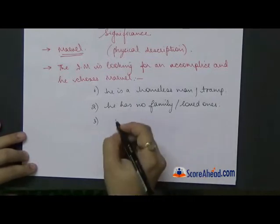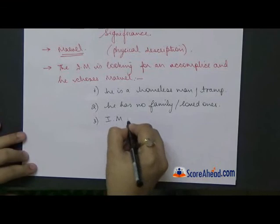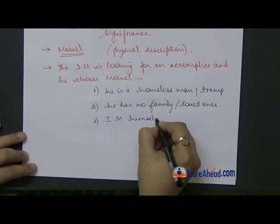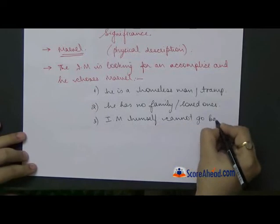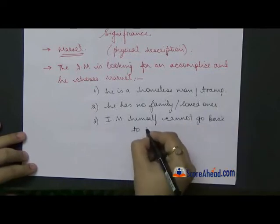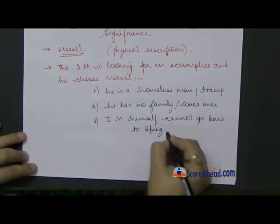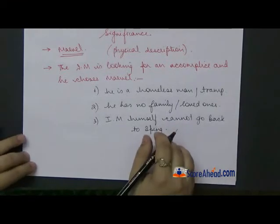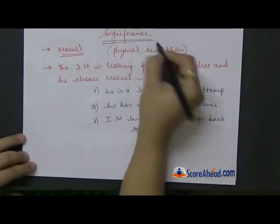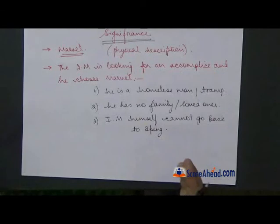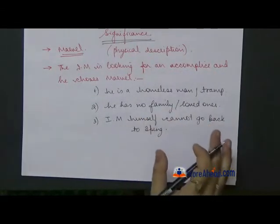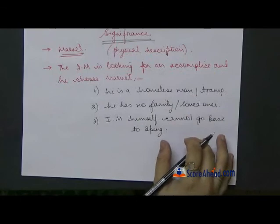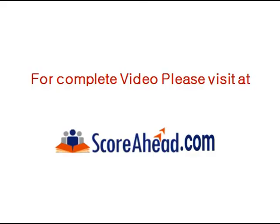The last reason is that the Invisible Man himself cannot go back to Iping, and he really wants his stuff back. Apart from the clothes, his experimental stuff is so important that he desperately wants it back. This is why he needs Marvel to go and retrieve it for him.